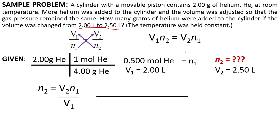So, substitute or put the given to the formula. This will give us 2.5 times 0.5 moles over 2.0 liters. Canceling the units, this will give us moles. And the final answer will be 0.625 moles.